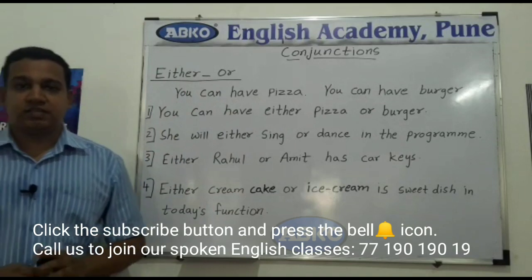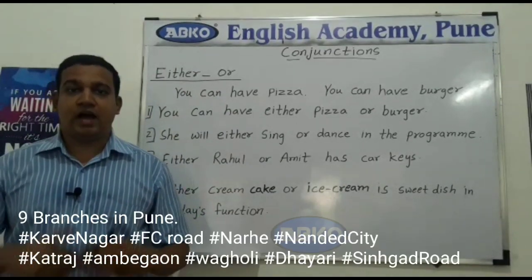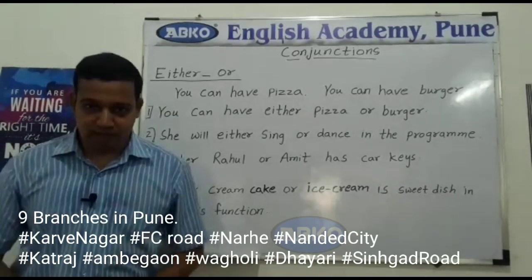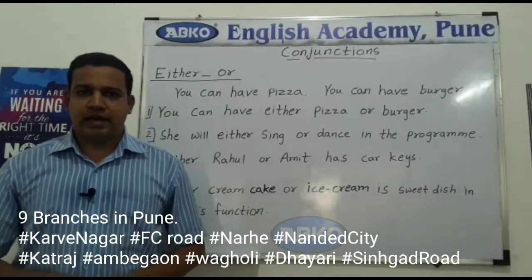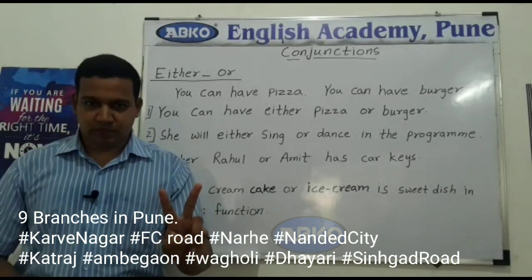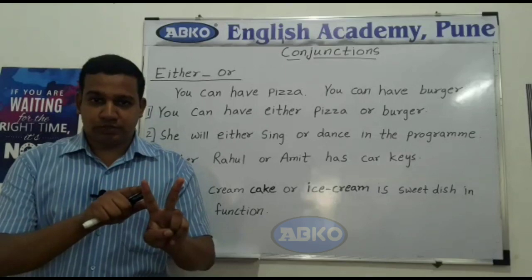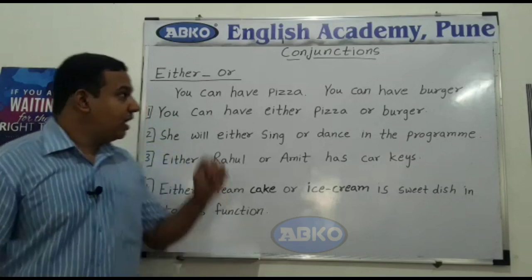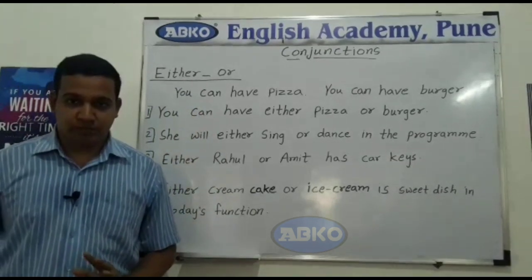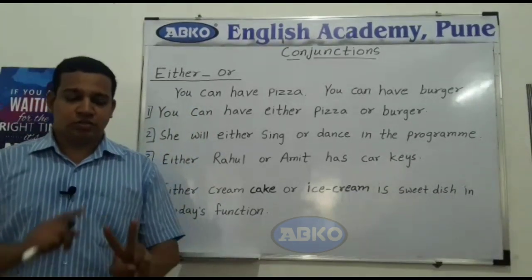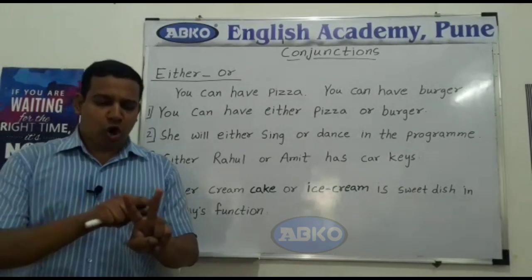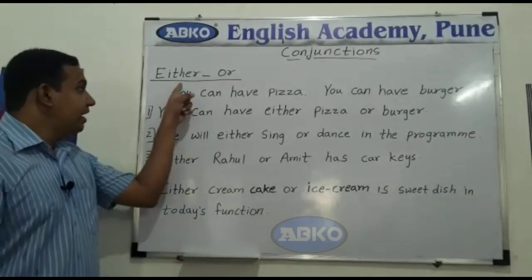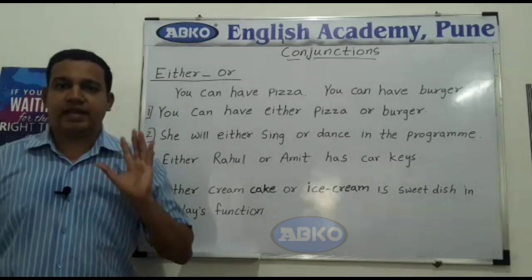Now let us first discuss how either...or is used, or when either...or is used. Either or कब और कैसे इस्तेमाल करते हैं, वो पहले देख लेते हैं. Suppose that there are two options in front of us and in those two options, I have to choose any one option. At that time I use the either...or conjunction. हमारे पास दो options हैं और उन दो options में से किसी एक option को हमें चुनना है, तब हम either...or conjunction use करते हैं.